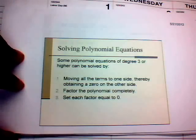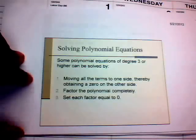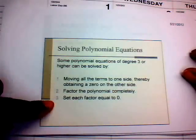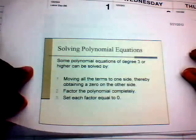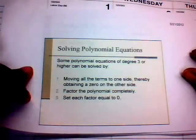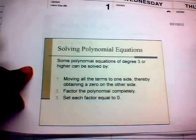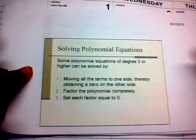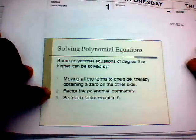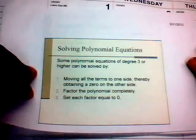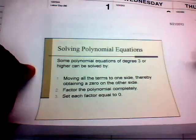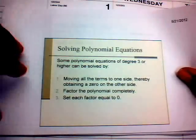Some polynomial equations of degree 3 or higher can be solved by these three steps. First, move all the terms to one side to obtain a zero on the other side. Second, factor the polynomial completely. Third, set each factor equal to zero and solve that equation for the variable.